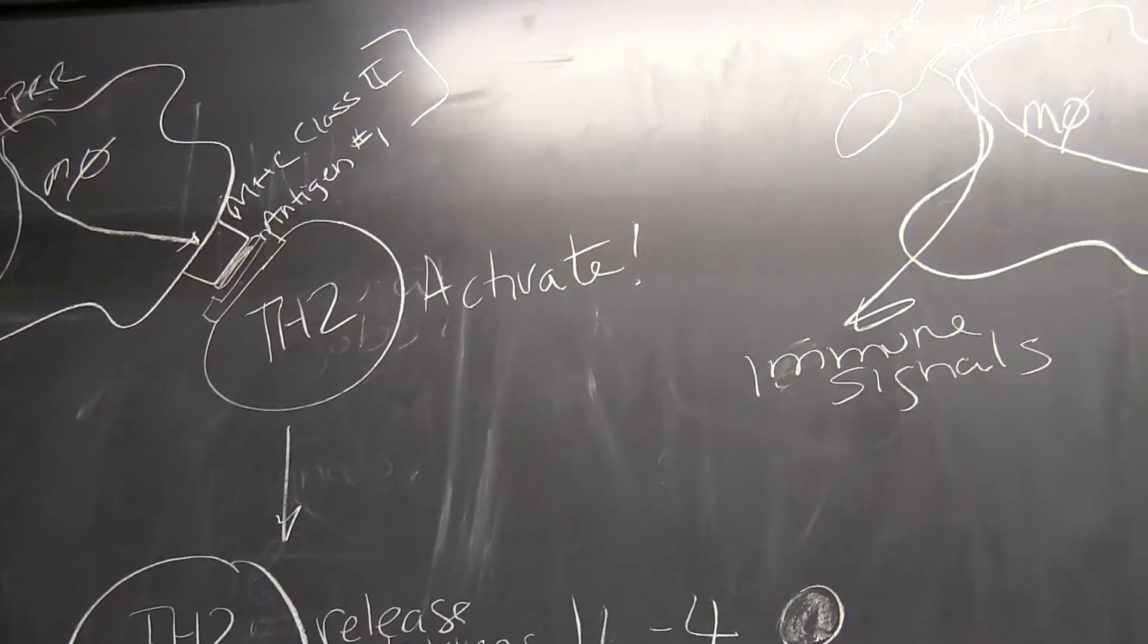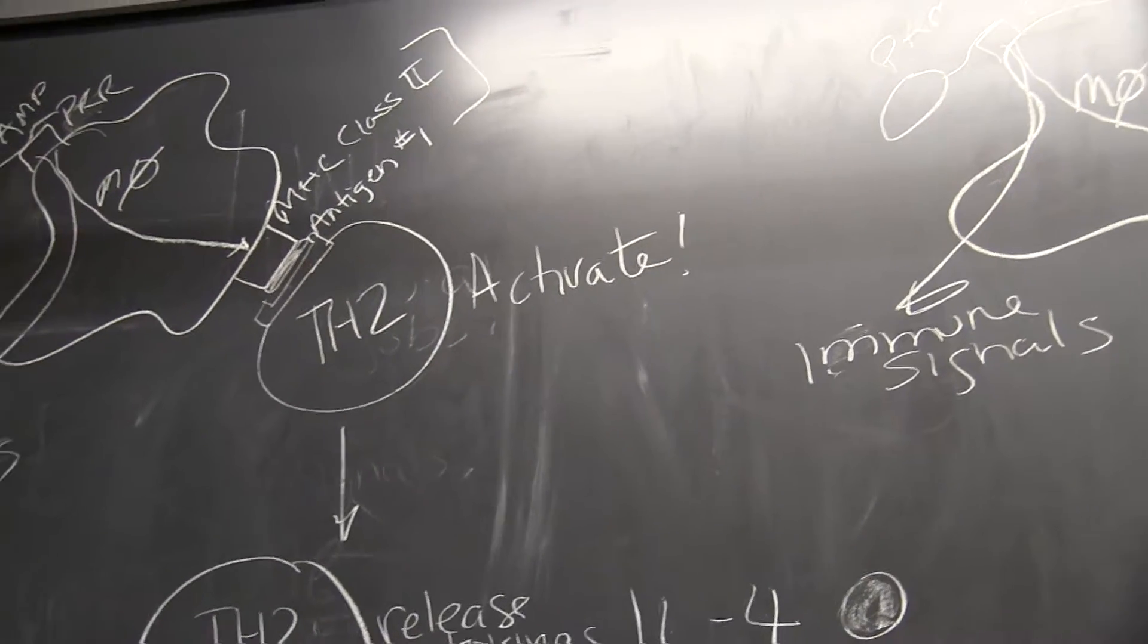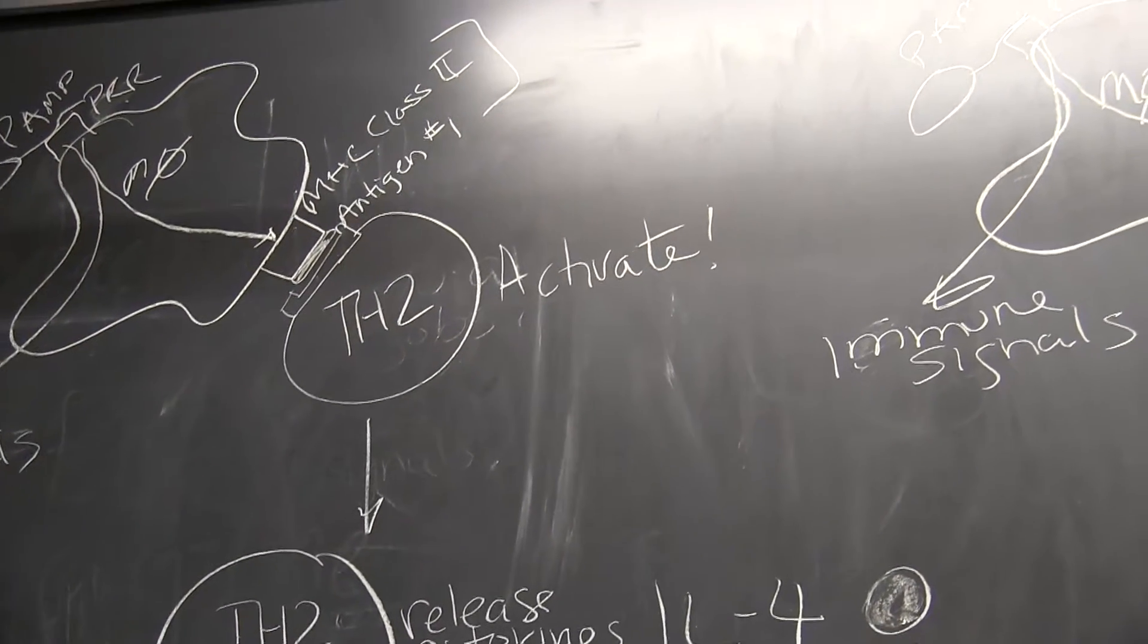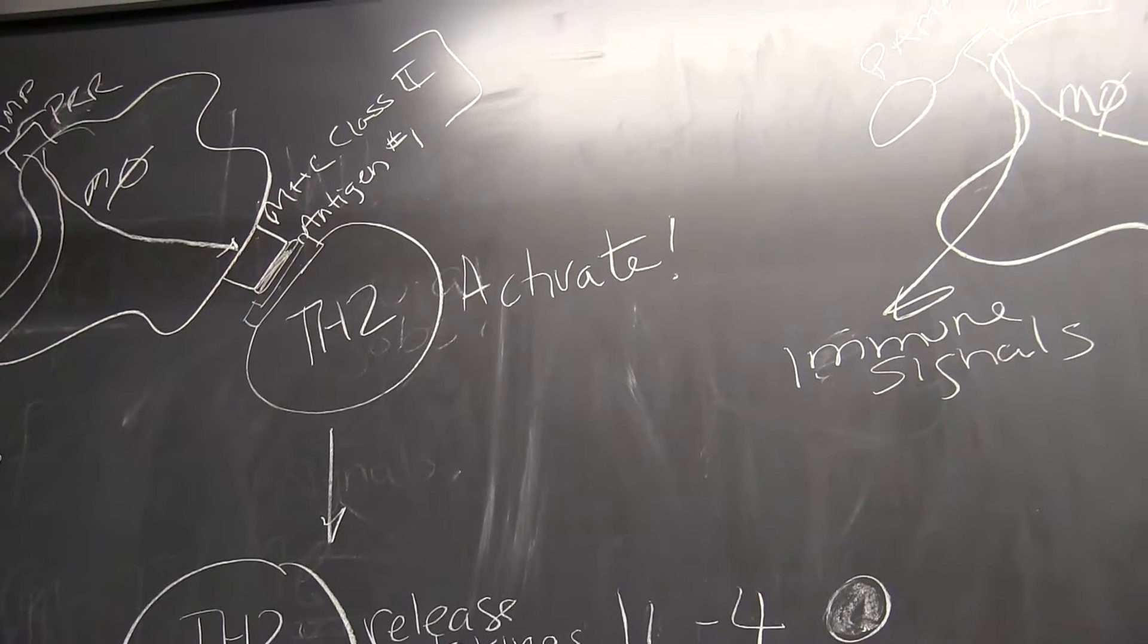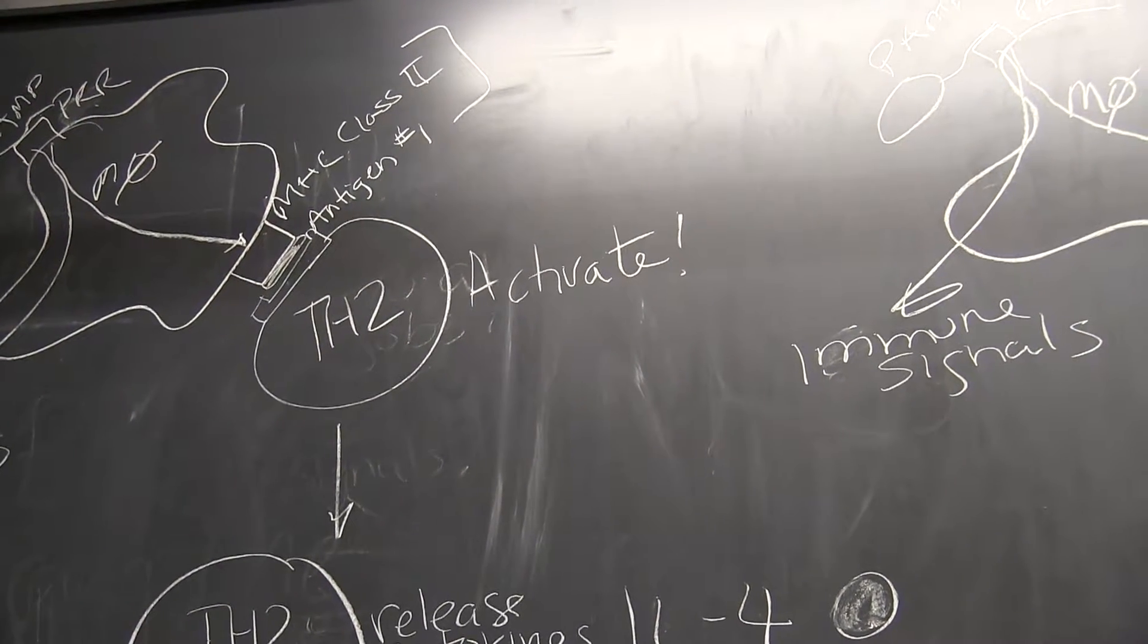When the TCR receptor on the helper T cell type two binds to antigen number one plus our MHC class two, we get activation of the helper T cell, TH2.